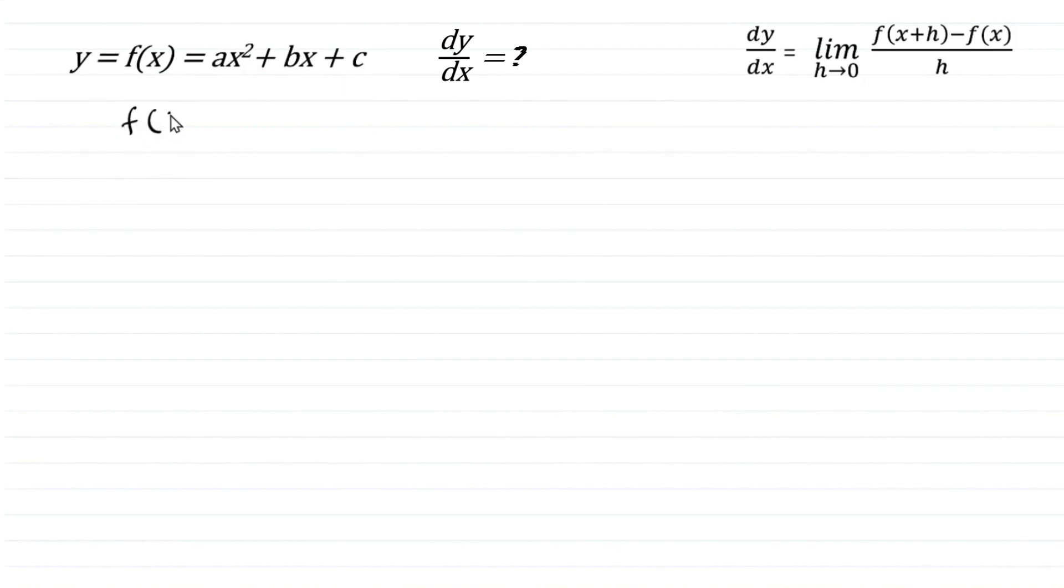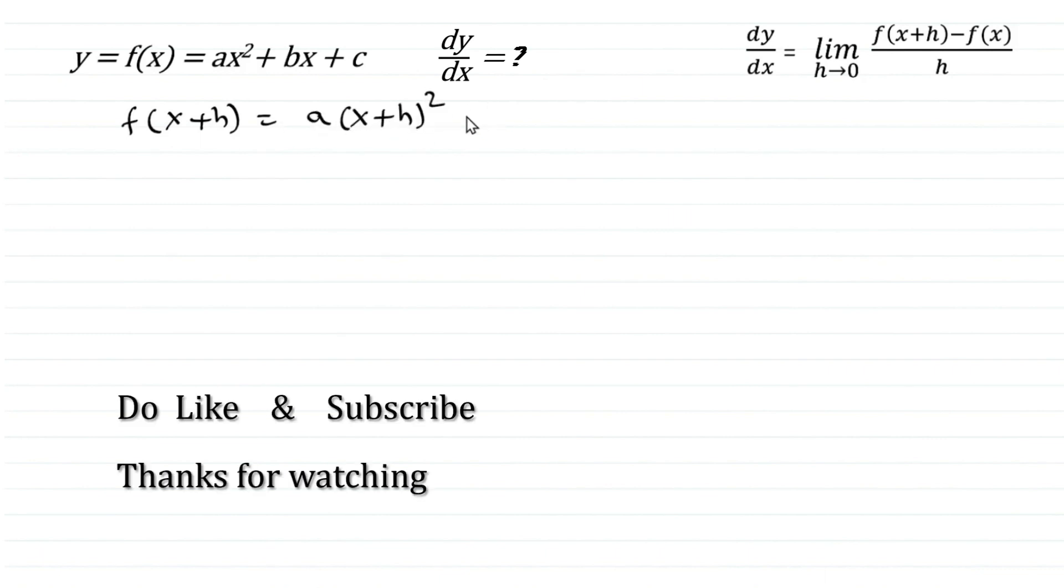In order to find f(x+h) we replace x by x+h in the given expression. So this becomes a times (x+h)² plus b times (x+h) plus c.